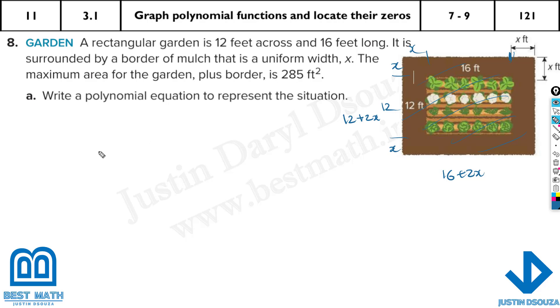So 16 is known, but then we have x + x. So the actual length will be 16 + 2x, and the height will be 12 + 2x. And the maximum area they have told is 285 feet squared. So here it is (12 + 2x)(16 + 2x) because area is given by length times width. This equals 285. We need to represent this in a polynomial equation.